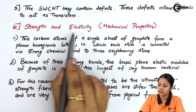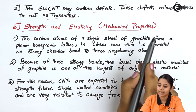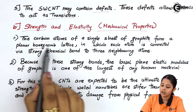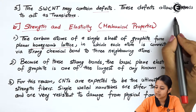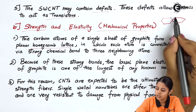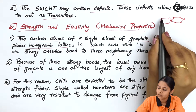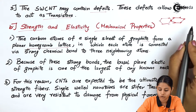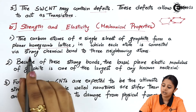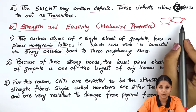The next property is strength and elasticity, both important mechanical properties of any engineering material. The carbon atoms of a single sheet of graphite form a planar honeycomb lattice — graphite is nothing but layers of hexagons. All the vertices are carbons attached to each other, forming a honeycomb structure, in which each atom is connected via a strong chemical bond to three other neighboring atoms.